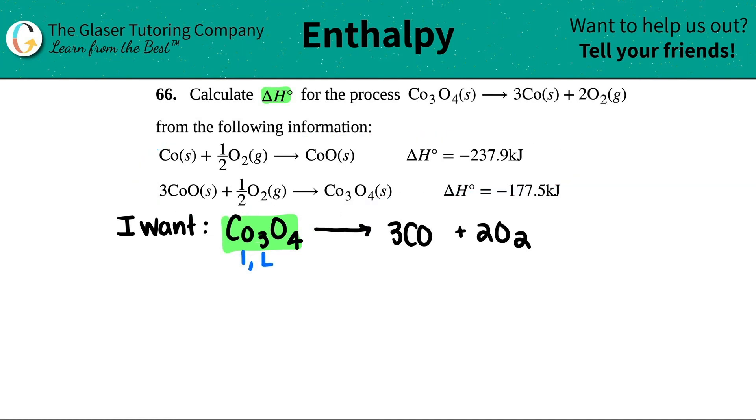Now I go to the two equations that they give me with the delta H values. And let's just call this equation number one. And let's just call this equation number two. Out of these two equations, you're going to find the compound that you're looking for. So which equation has the Co3O4? Which one do you think? Yeah, it's equation number two. It's right here. Here's the Co3O4. The first equation does not have this compound.